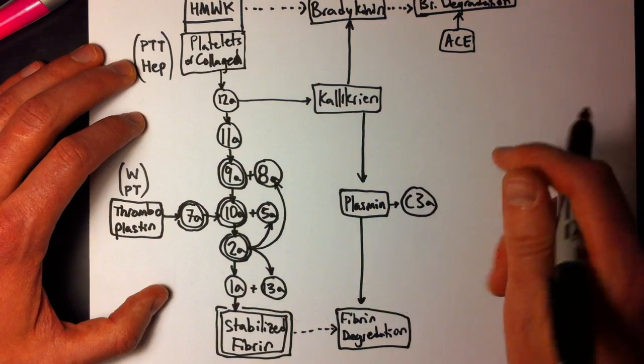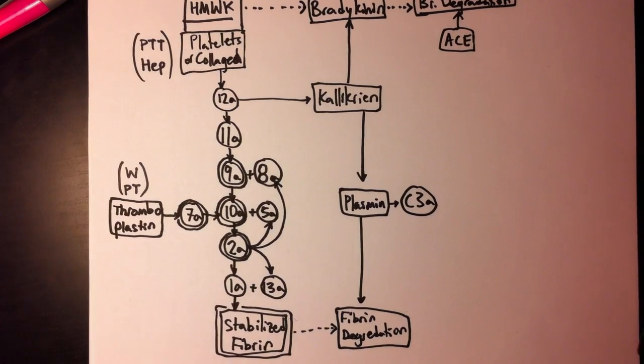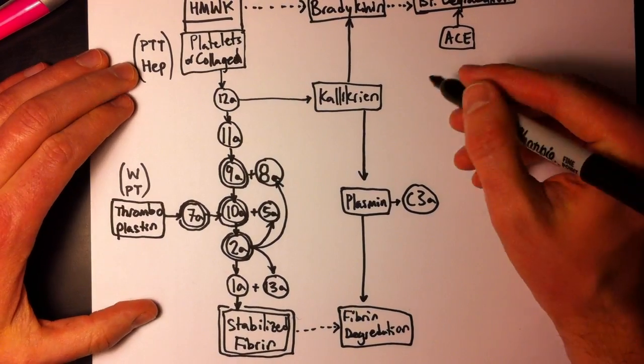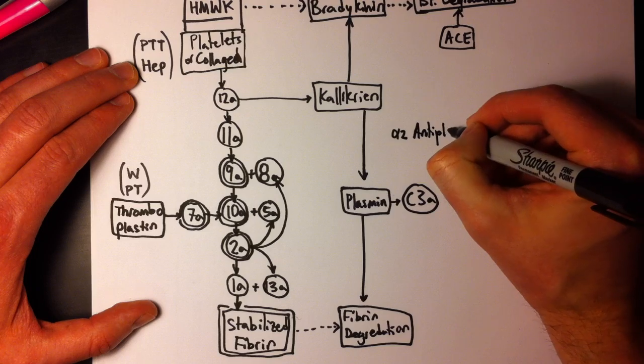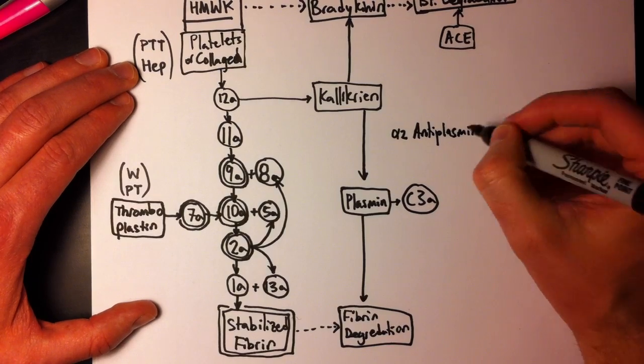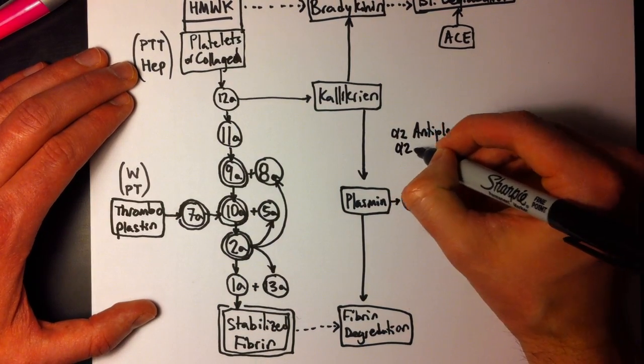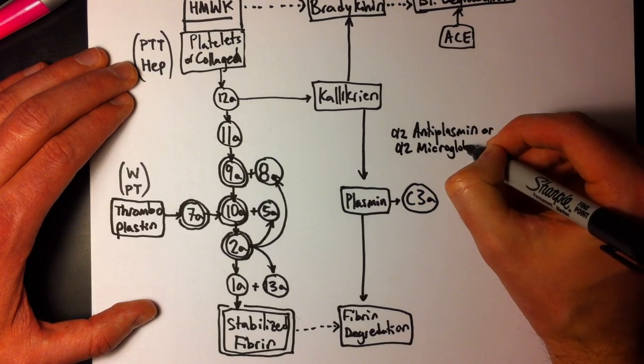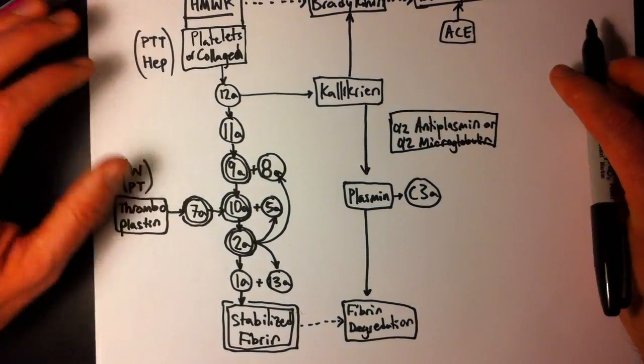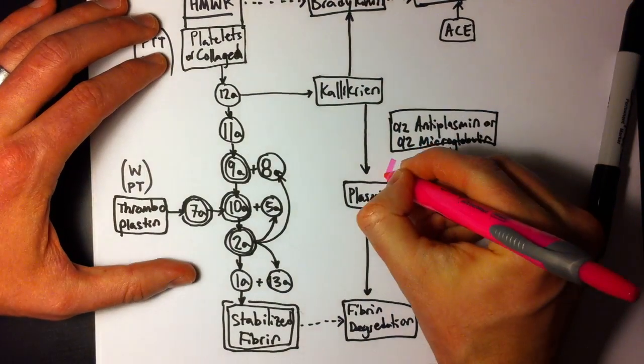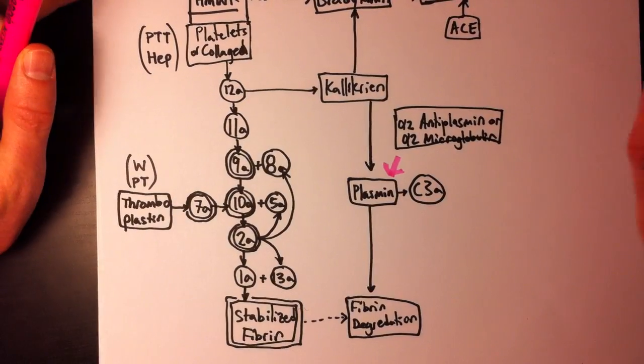So, one last, or not one last thing, there's a couple things. So, plasmin. Plasmin is really powerful, so we need a way to stop it from, kind of, stop it in its tracks. We're going to go with a few different things that can do that. One of those is alpha-2 antiplasmin. Another, or alpha-2, is microglobulin. And I'm going to break out my pink arrow to show that that is being broken down. So, just so we know what's going on. So, this is breaking down plasmin. So, there's that.